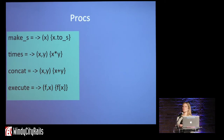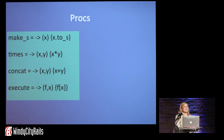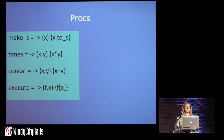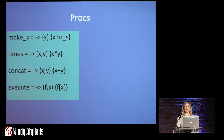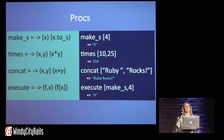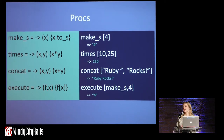Ruby has procs. Procs are the thing that helps make Ruby more functional. I met Matz in around 2008 and asked him what he would do differently if he were starting Ruby from scratch. He said he'd make it more functional. So we've got these procs. Here we've got four procs: make_s just turns things into strings, times produces the product, concat produces the concatenation, and execute is a little more interesting — it takes f and x and applies f to x. So f is a proc; it's a proc that takes a proc. Calling execute passing it the proc make_s and the value 4 does nothing more than applies make_s to 4 and returns "4".